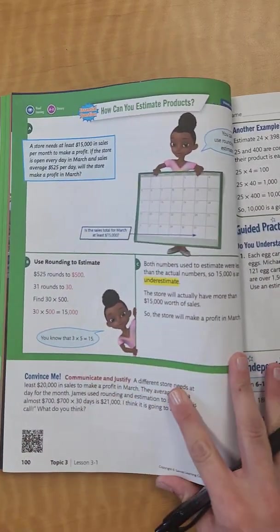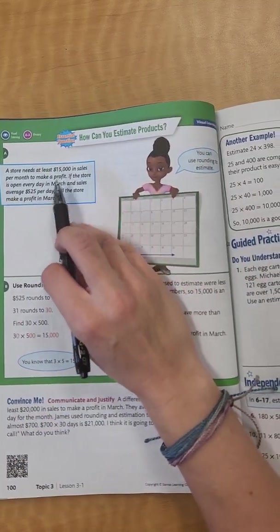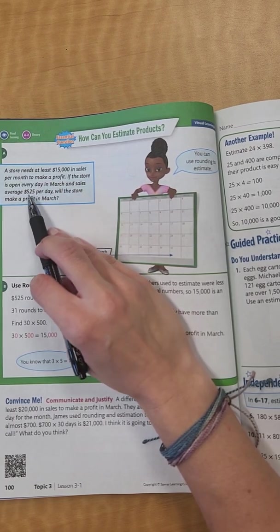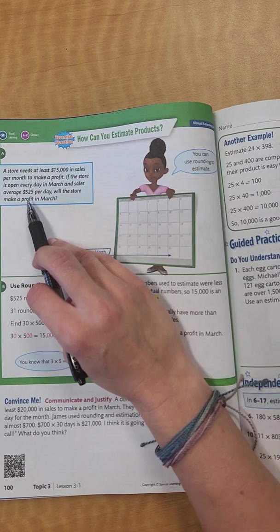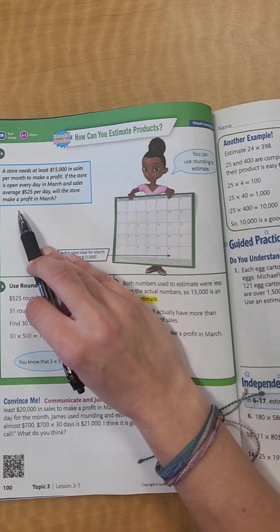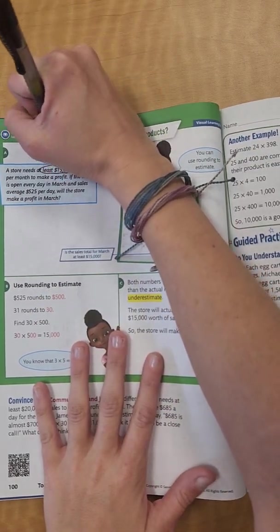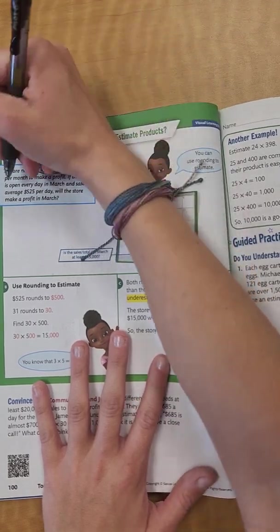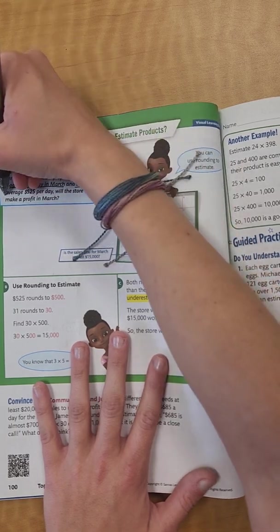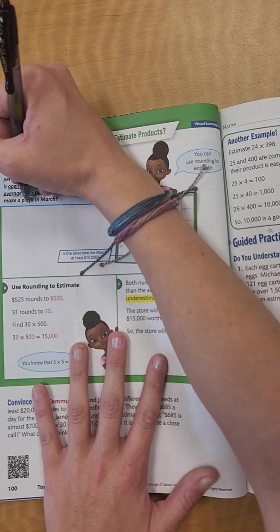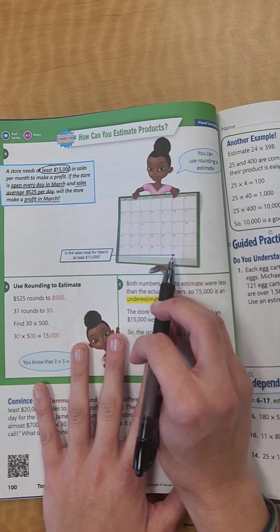This problem says, a store needs at least $15,000 in sales per month to make a profit. If the store is open every day in March, and the sales average $525 per day, will the store make a profit in March? So we need at least $15,000 in sale, and it is open every day in March, and then the sales average $525 a day. Is it going to make a profit? So we see right here, there's 31 days in March.